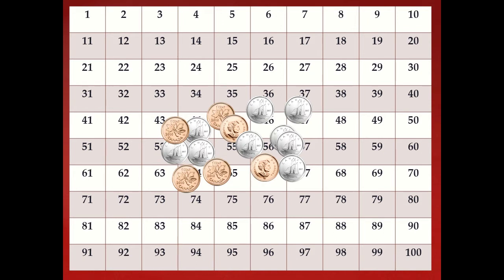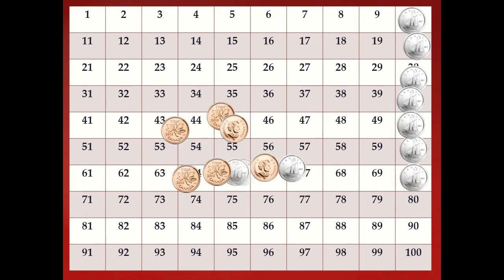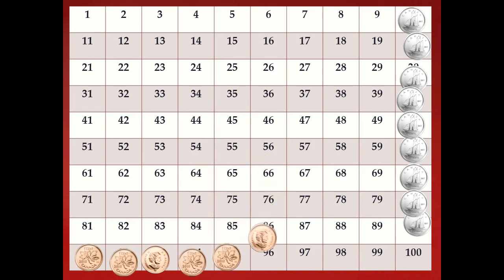We have some more money here, and we're going to use our hundreds chart to help us count it. I want you to count with me. Our dimes are worth the most out of these coins, so we're going to start counting with dimes: ten, twenty, thirty, forty, fifty, sixty, seventy, eighty, ninety, ninety-one, ninety-two, ninety-three, ninety-four, ninety-five, and ninety-six. Good counting.